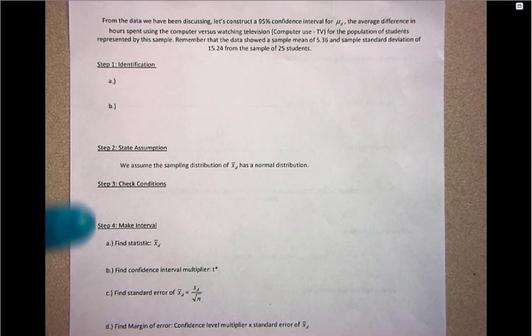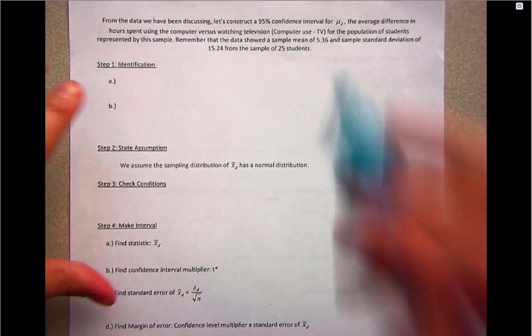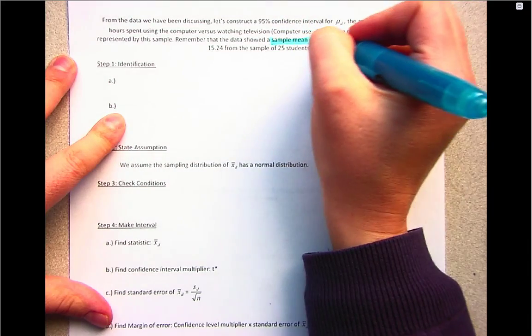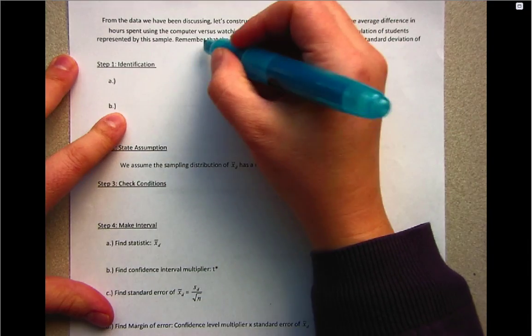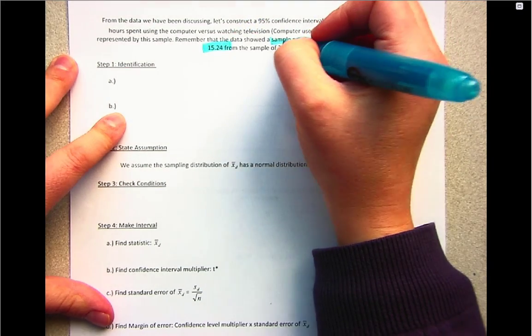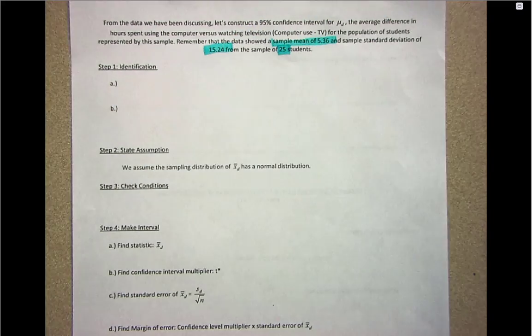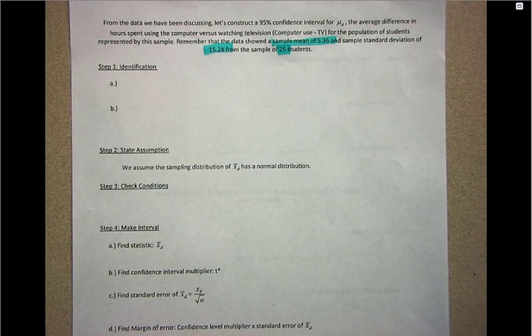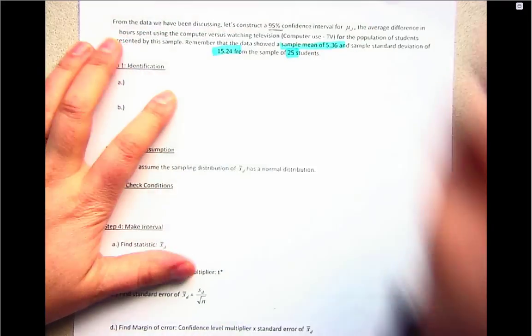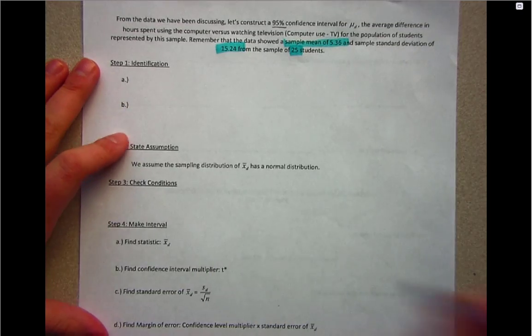We've already calculated the sample mean difference, which is 5.36, with a corresponding standard deviation of 15.24 and a sample size of 25. We're going to construct a 95% confidence interval.